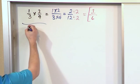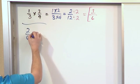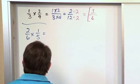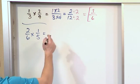Alright, so the next problem, what if we have 2/6 times 1/5? I want to multiply these guys. Alright, so what we do, we multiply the tops, multiply the bottoms.